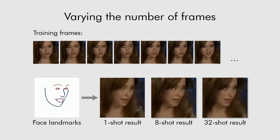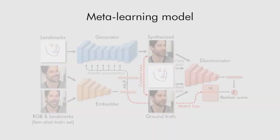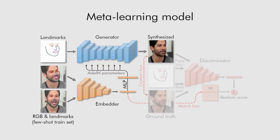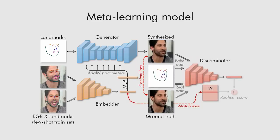Our approach uses a meta-learning stage which is performed on a huge dataset of videos. For the results in this presentation, the VoxCeleb2 dataset is used. Three networks are trained during the meta-learning stage. The embedder network maps frames concatenated with landmarks into vectors containing pose-independent information. These vectors are used to initialize the parameters of adapted layers inside the generator network, which maps landmarks into the synthesized video. Finally, the discriminator network assesses the realism, pose, and identity preservation of the generated frames. Better identity preservation is achieved by having a trainable embedding vector inside the discriminator for each training video.